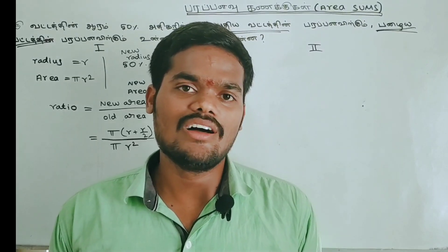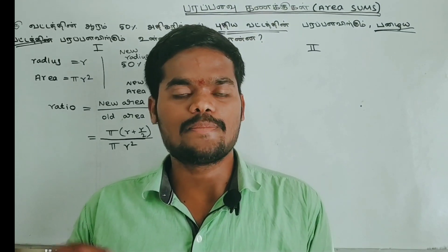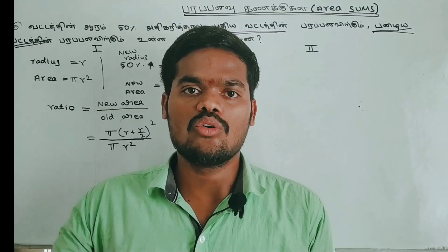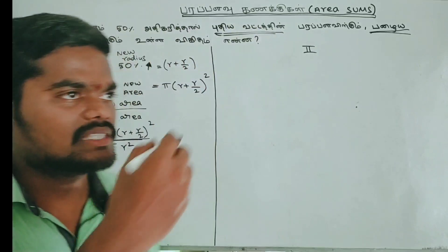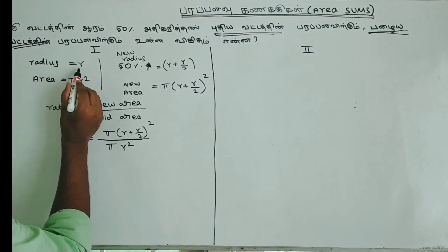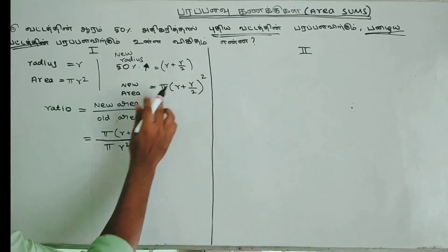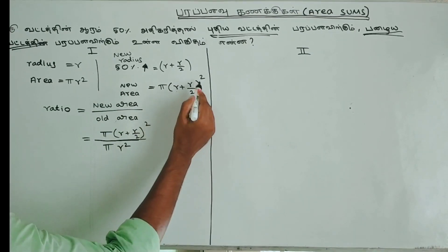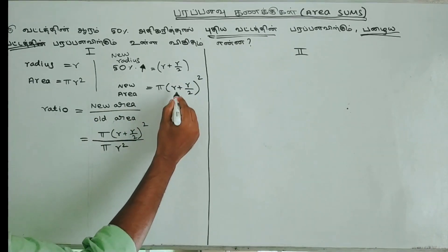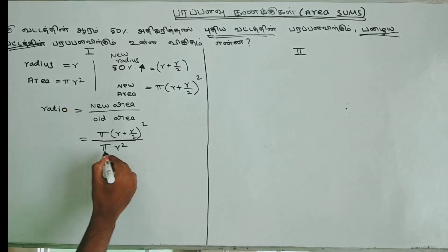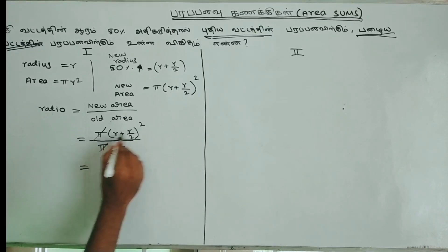Let's say the radius of a circle is r, so the area is pi r squared. The new radius is r plus r/2. Then the new area is pi times (r + r/2) squared. The ratio is new area divided by old area.